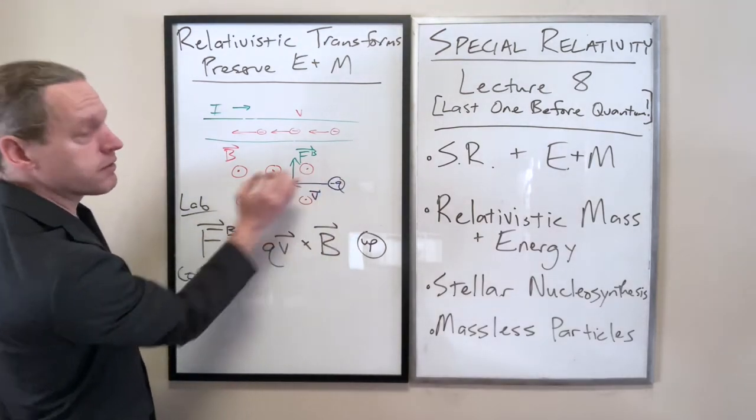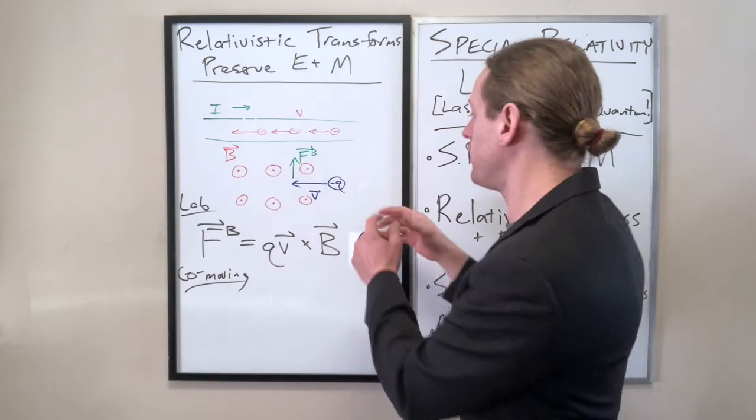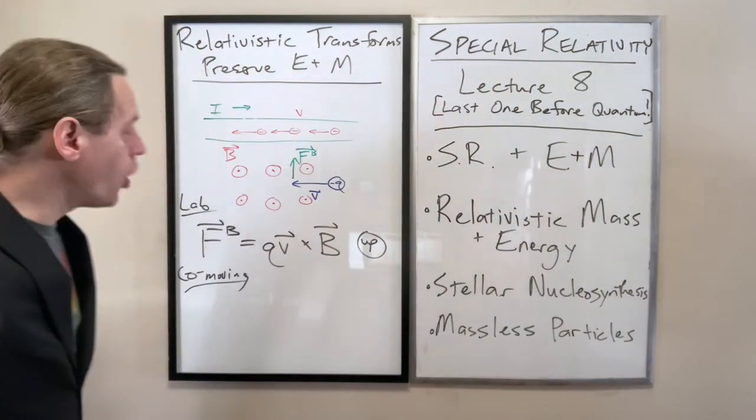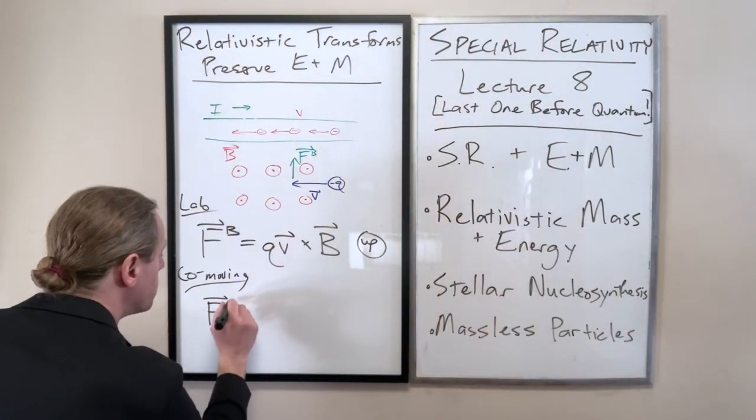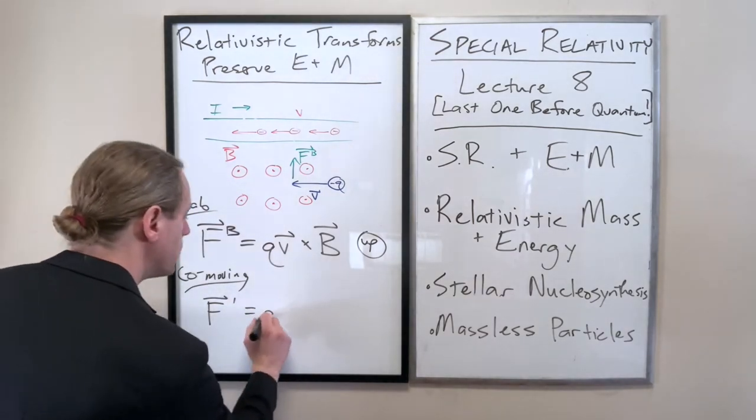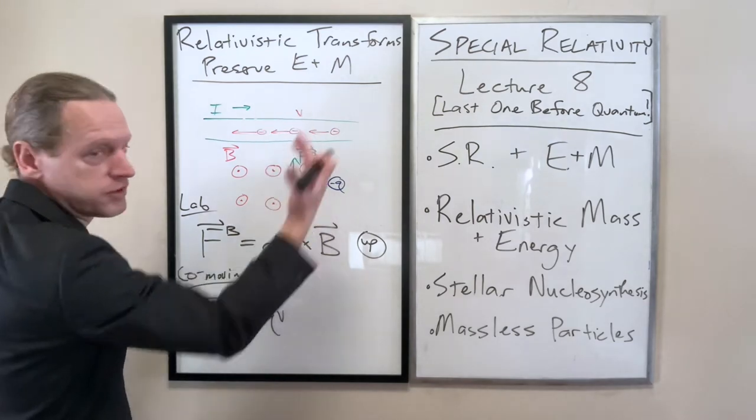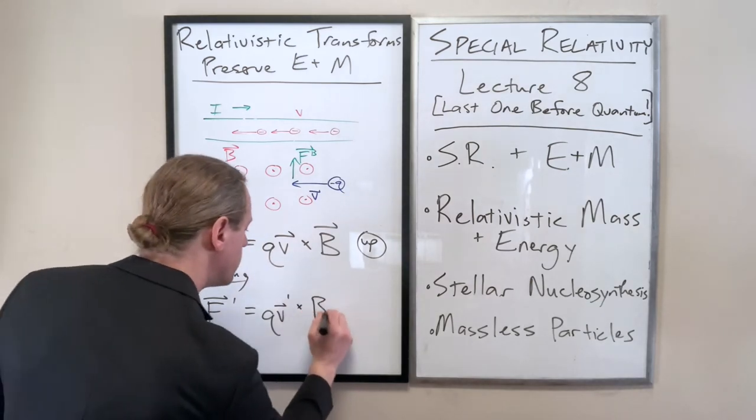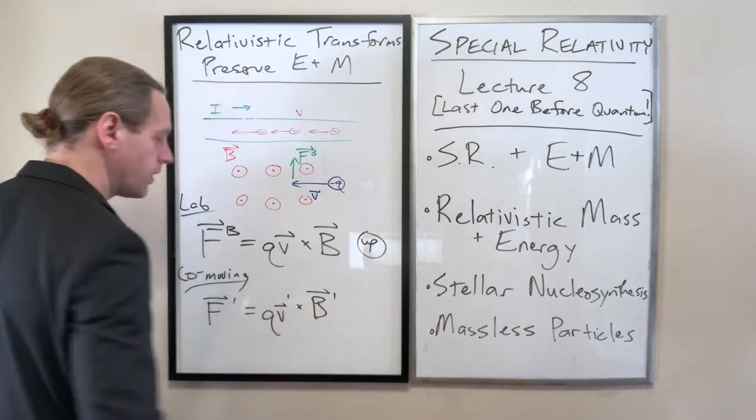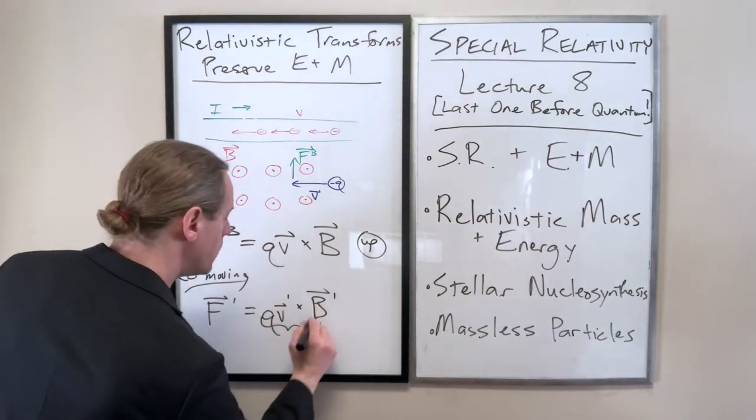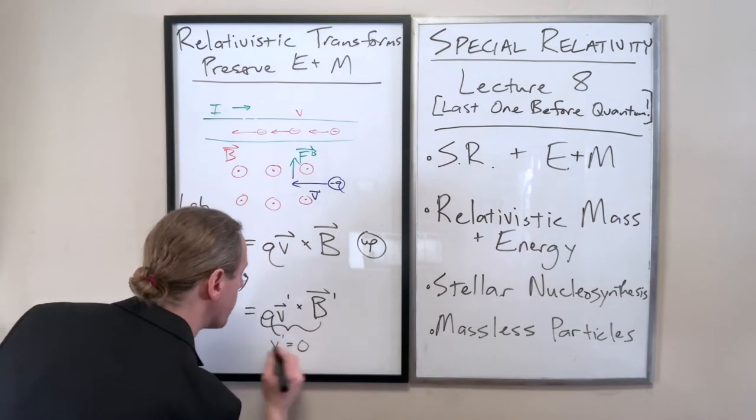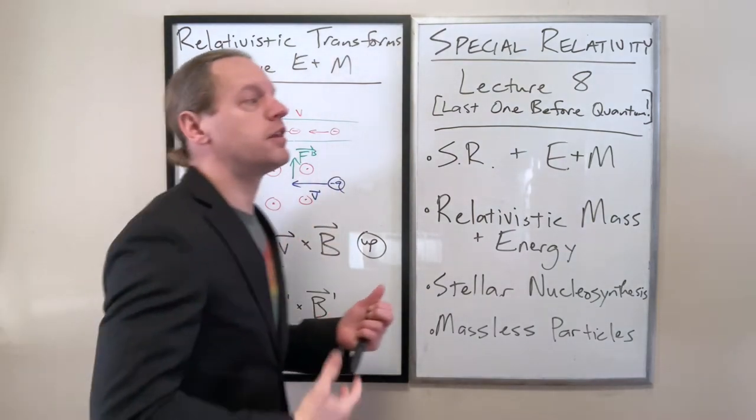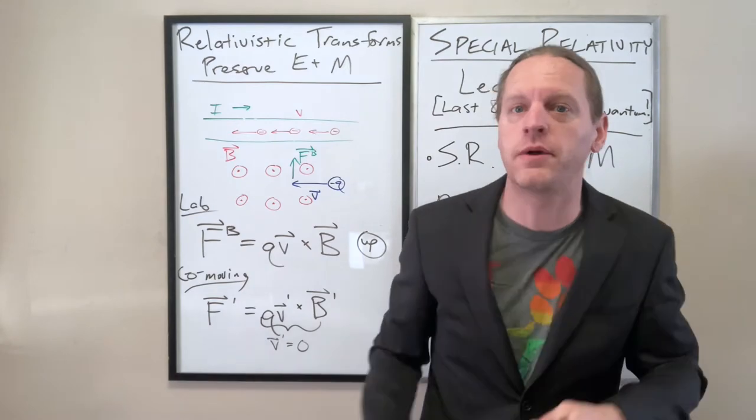And if we want to consider the co-moving frame, we've already gone through this before, so I'm not going any more in depth than just to sketch it out qualitatively. But a co-moving frame with that negative charge, if you're in a little tiny spaceship going right along at the same velocity V, what you see is that charge just sitting still.